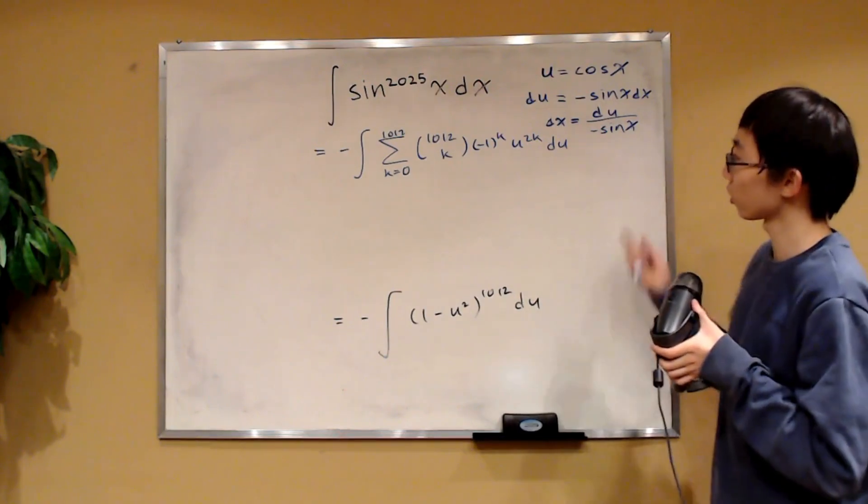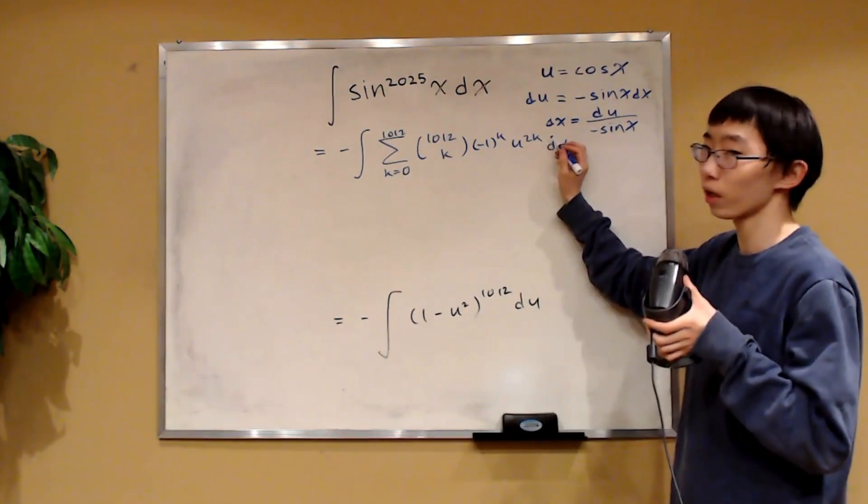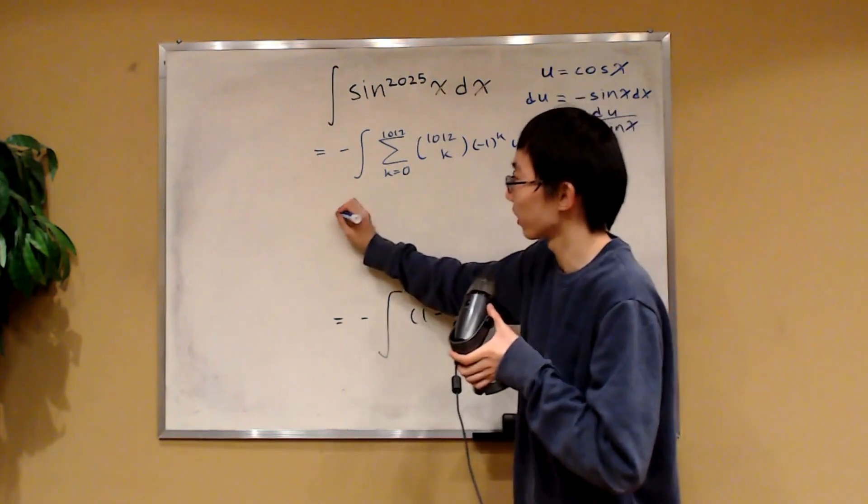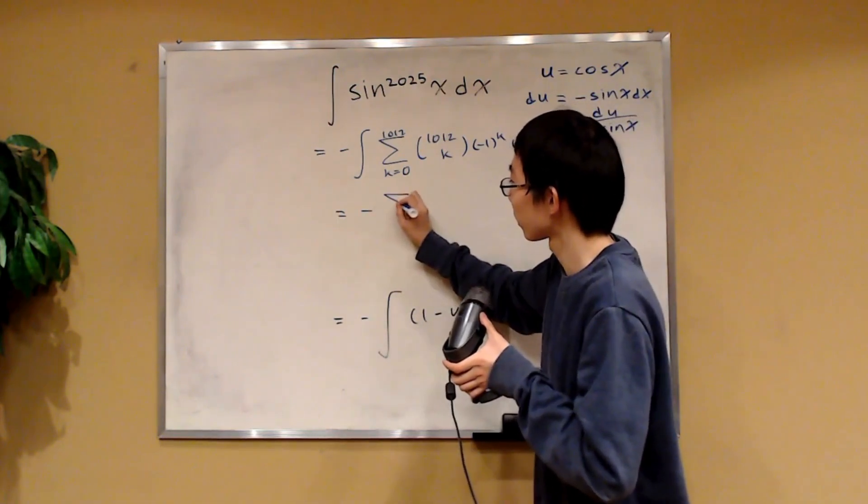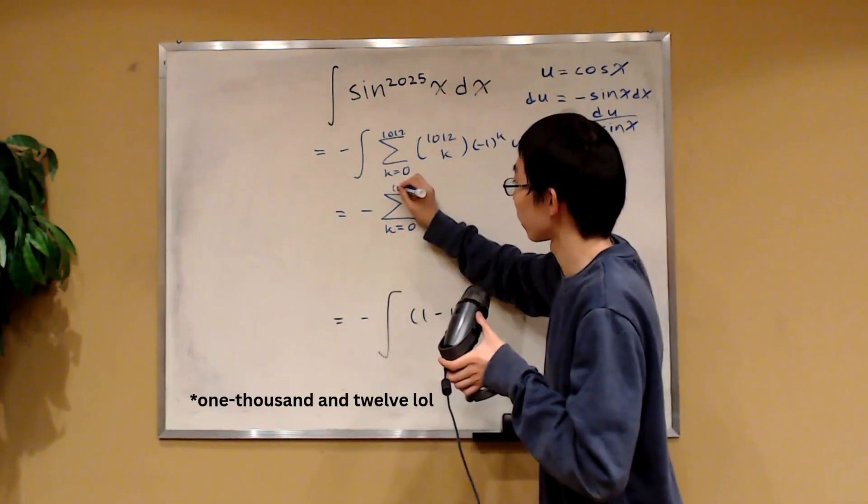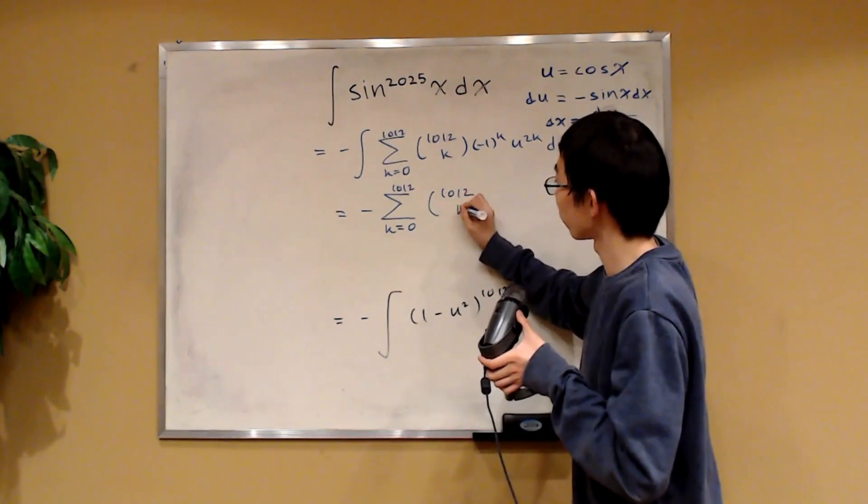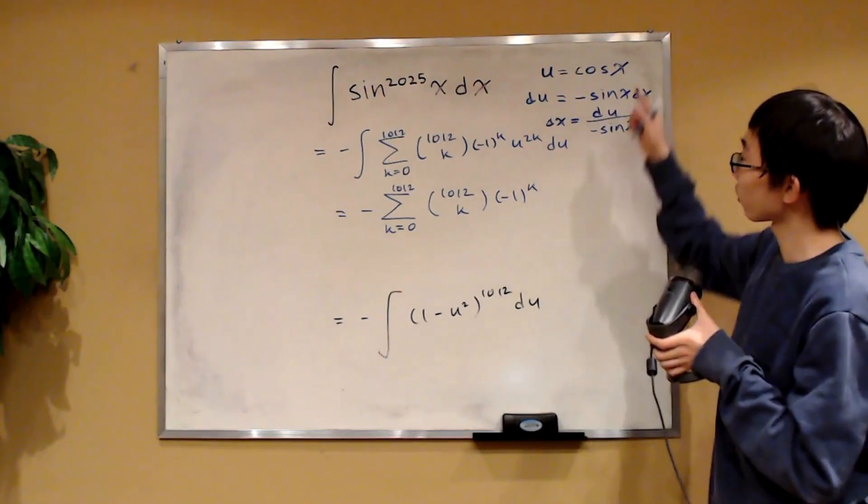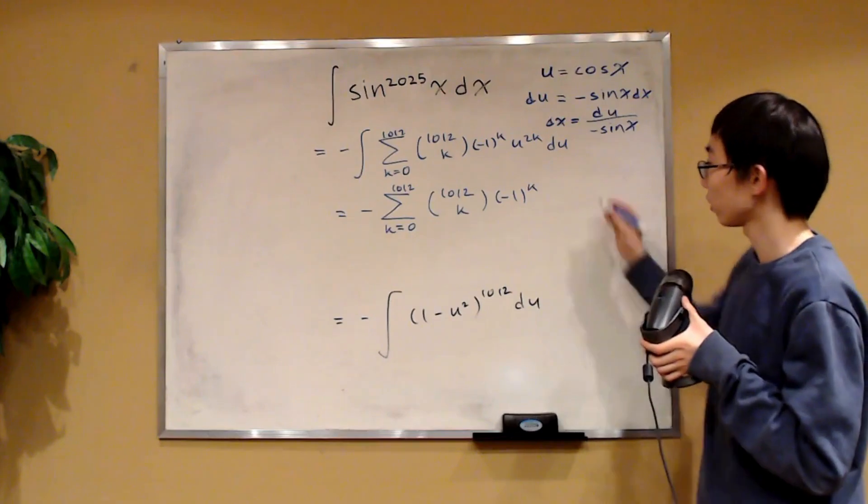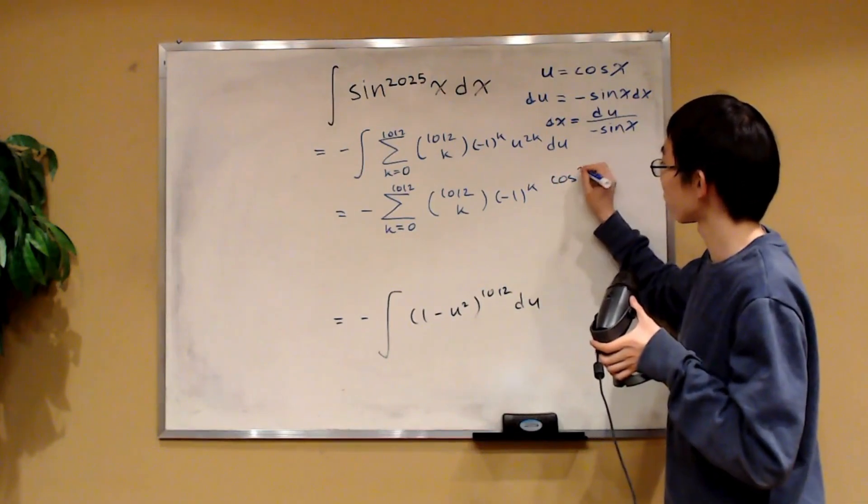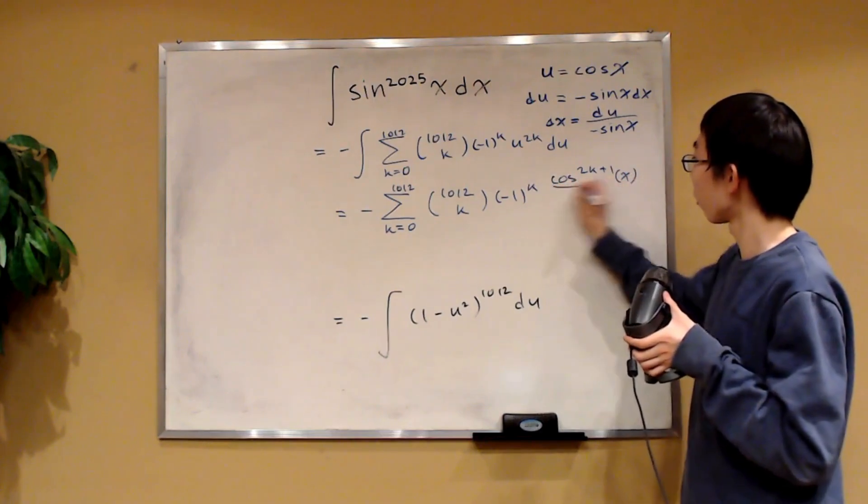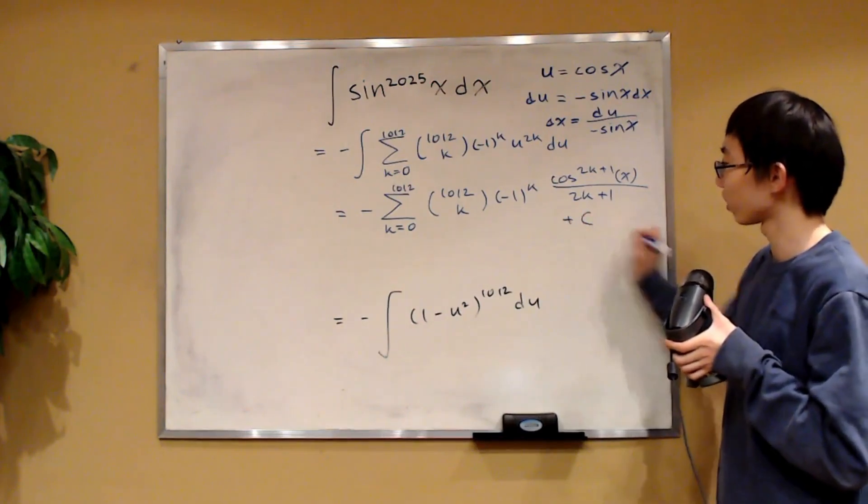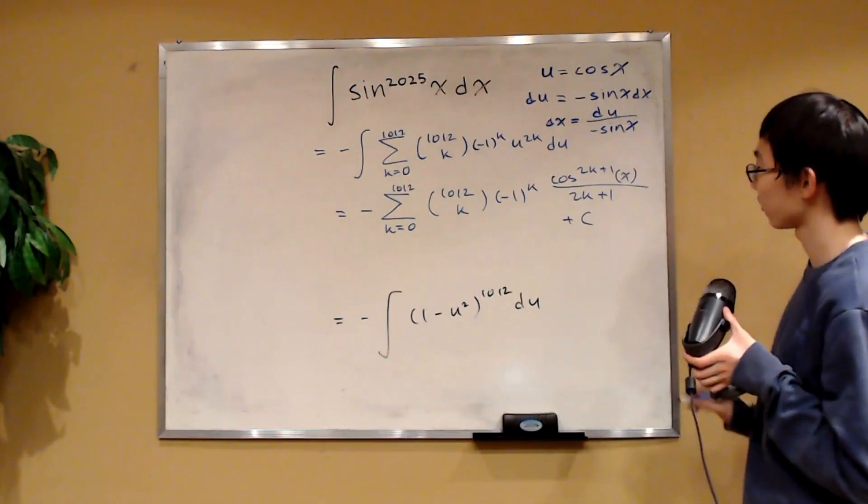And we can integrate this by just raising the power on u by 1, and then dividing by the new power for each term. So this integral becomes the negative summation of k equals zero up to 1012 of 1012 choose k, and then negative one to the k. And this u over here was equal to cosine x. So let's substitute that back while we're at it. So this is cosine of 2k plus 1 of x over 2k plus 1. And then of course, we need our constant. So this over here is going to be the answer to our integral.